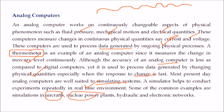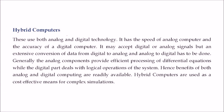Then we have hybrid computers. Why not use the speed of the analog computer and the accuracy of the digital computer? If we combine them, it may accept digital or analog signals, but there has to be some conversion — like an A-to-D converter, analog to digital, or digital to analog. The hybrid is analog plus digital.